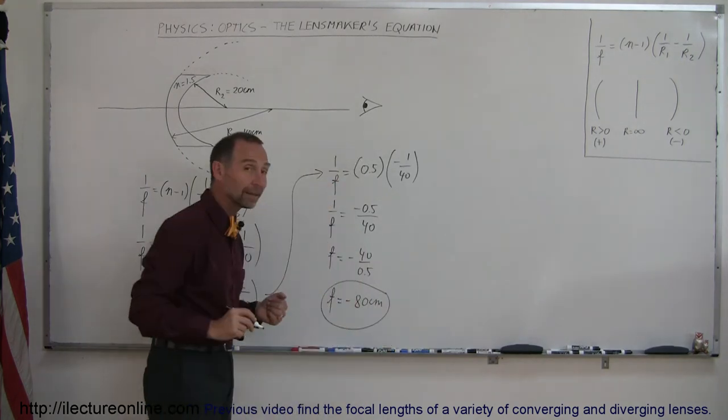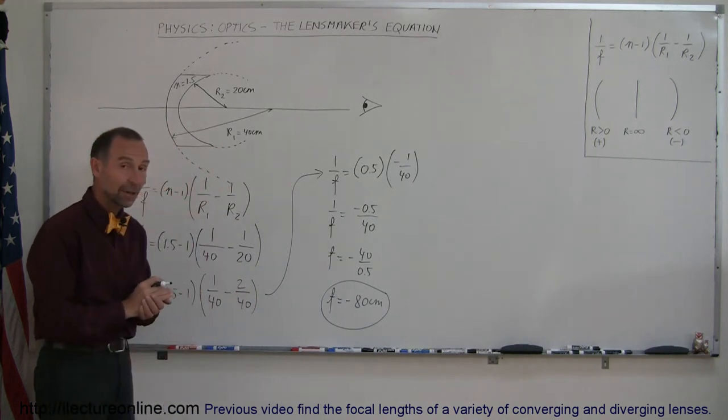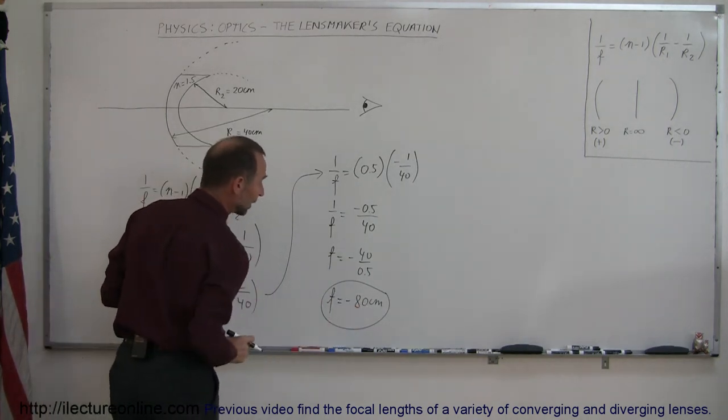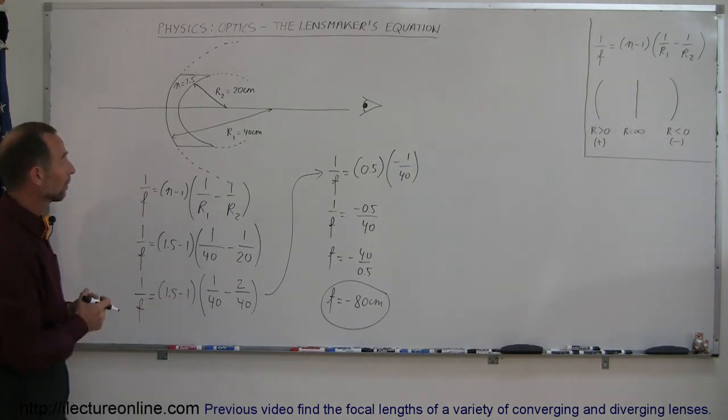And as we predicted, the focal length is negative. That means it's a diverging lens, and it is 80 centimeters. And that is how you do a problem like that.